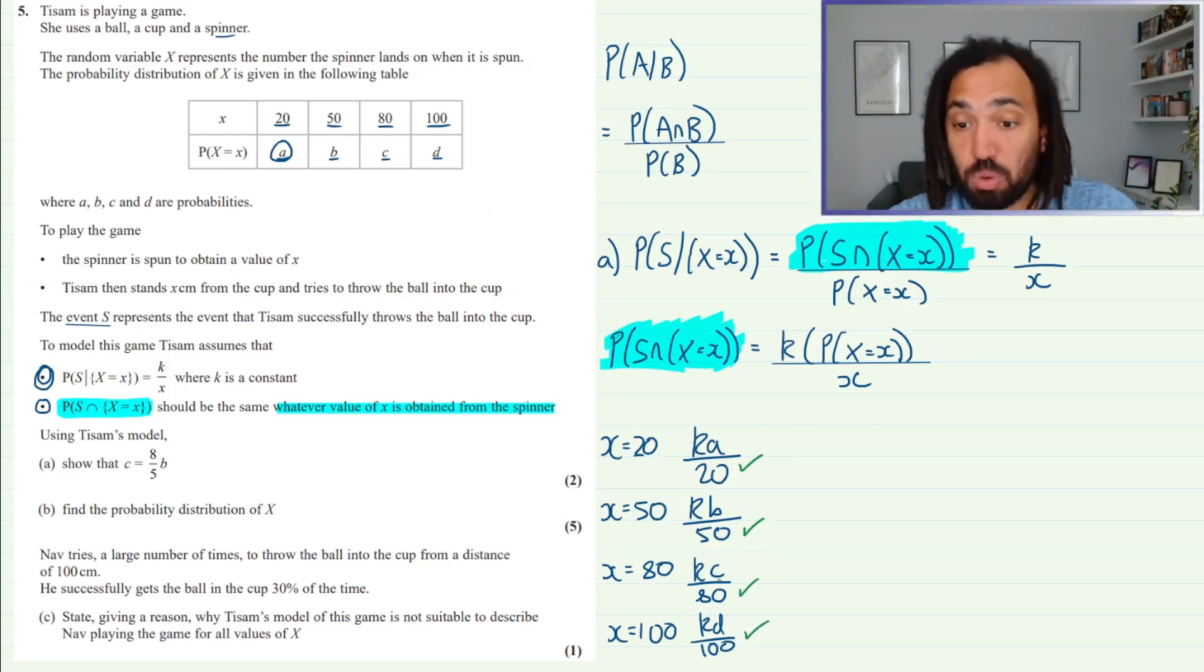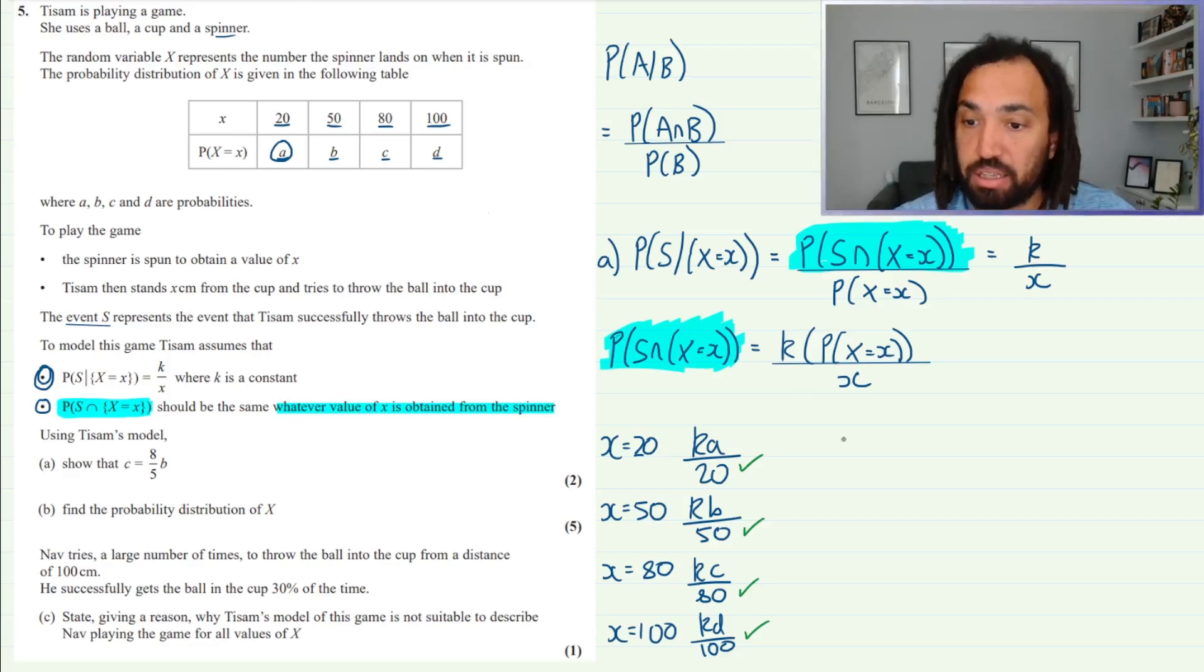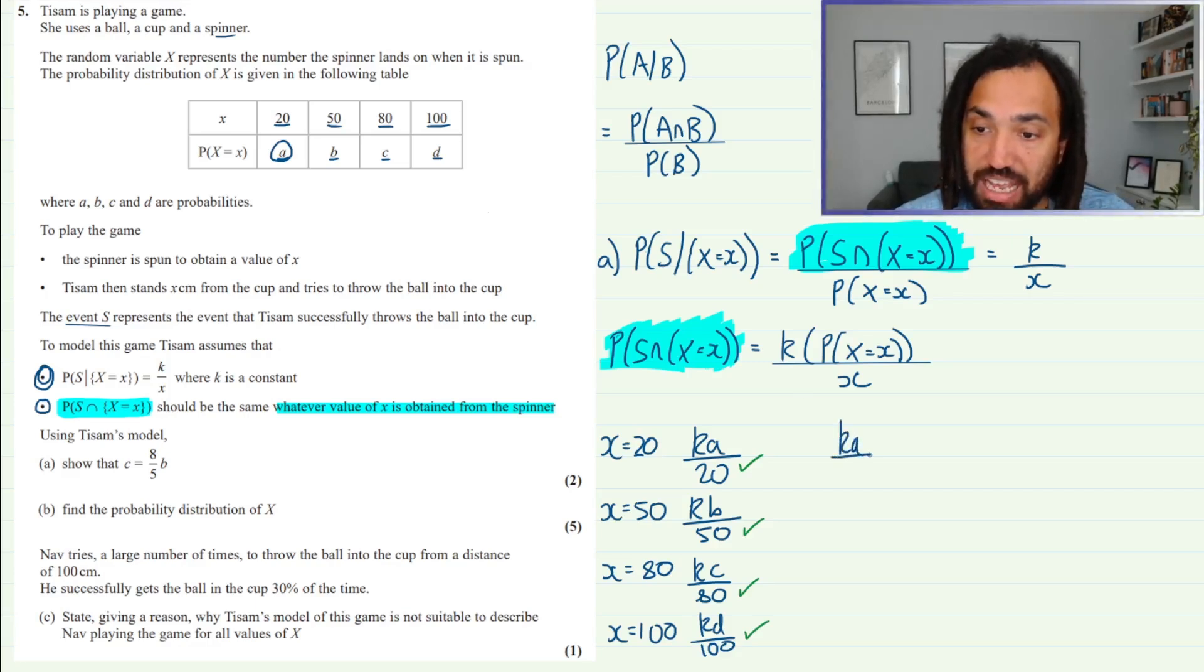What does that mean? Well that means that all of these must be the same because they're all equal to exactly the same thing which is the blue thing. So I can say that KA over 20 is equal to KB over 50 which is equal to KC over 80 which is equal to KD over 100.